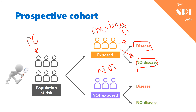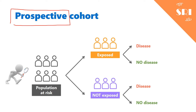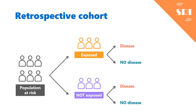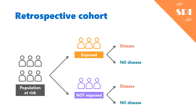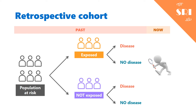We call this a prospective cohort because we choose and divide the population in the present — exposed vs. non-exposed — and then follow them into the future. The opposite is a retrospective cohort, sometimes called a historical cohort, where the entire process already happened in the past and we look at records to understand what happened to the people.